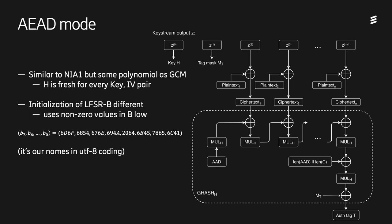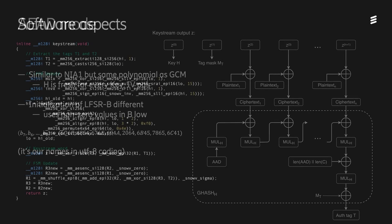However, one important distinction from AES-GCM is that the key H is fresh for every new pair of key and IV. One thing that differs from the normal operation of SNOW-V is that the initialization of LFSR-B is a bit different. The low part of B is initialized with all zeros when used for only encryption, but in the AEAD mode, we insert a different value in the low part of the B register — it's just the names of the authors in UTF-8 encoding.